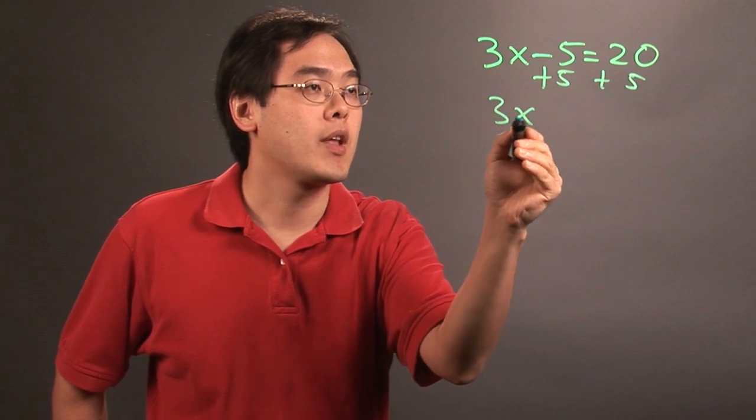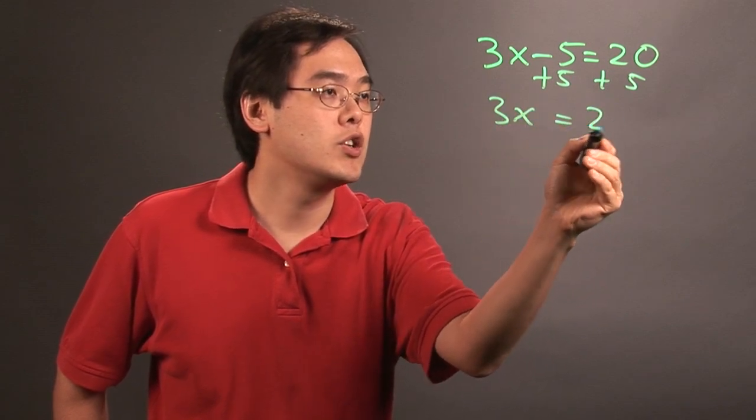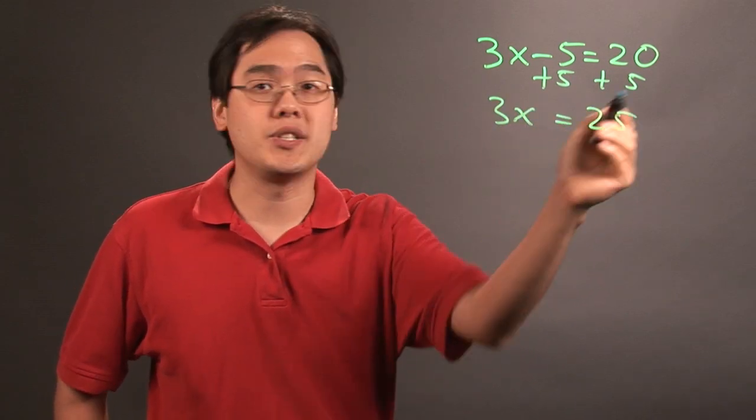So you're going to have 3x equals 25. That would be step number one.